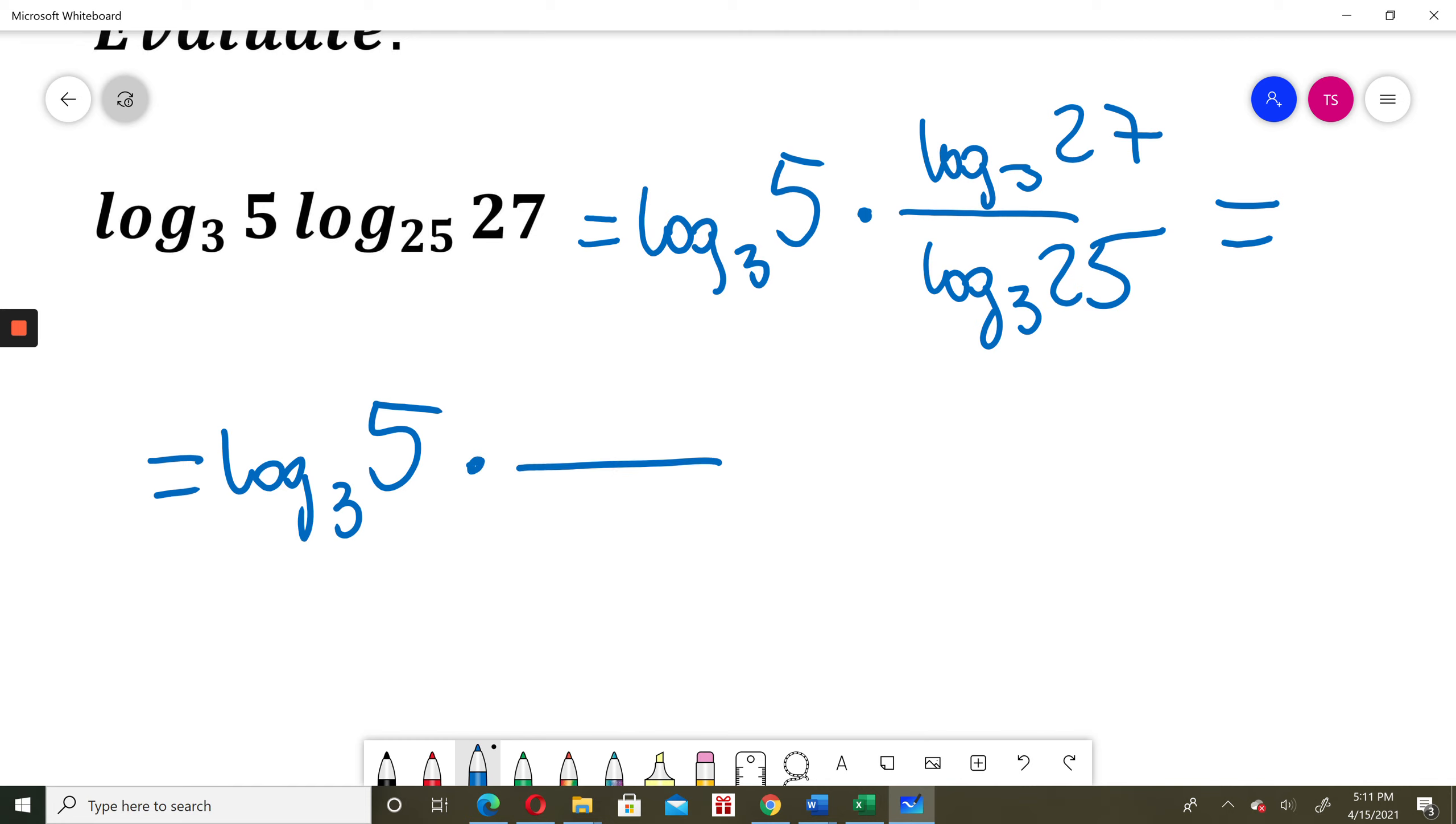Log base 3 of 27 is just 3 to what power to get 27, which is to the power of 3. And in the denominator, log base 3 of 25 is just 5 squared.